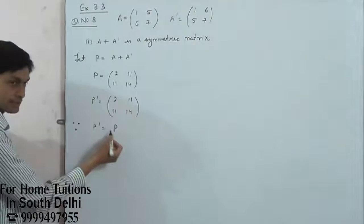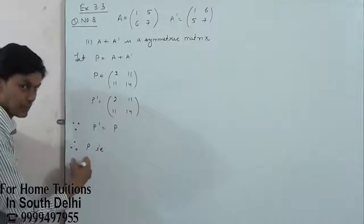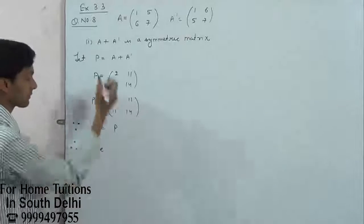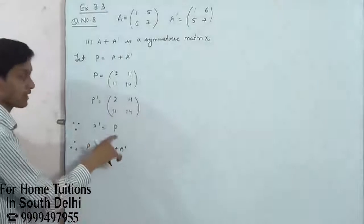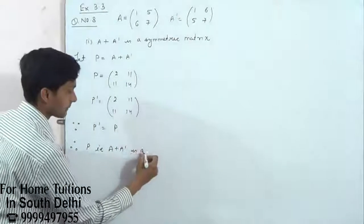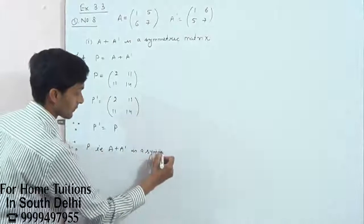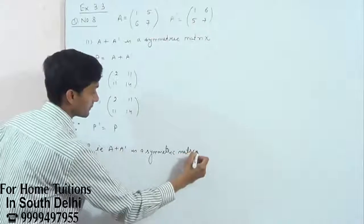Since P dash is equal to P, therefore P, that is A plus A dash, is a symmetric matrix. P dash equals P, which means A plus A dash is a symmetric matrix.